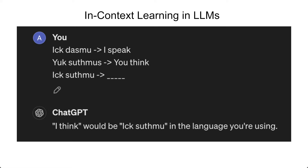But in-context learning is actually even more powerful than the previous example. It's conceivable that movie reviews were part of the training dataset, but in-context learning can actually extrapolate to tasks that were most certainly not seen during training. In this example, we provide ChatGPT with a made-up language and ask it to translate it to English. And remarkably, it can recognize the patterns within other translations it has been trained on to correctly translate this made-up language to English.